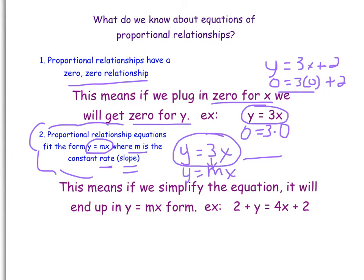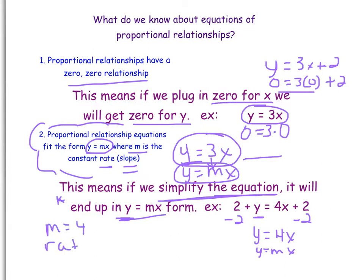We might have to change some things, and that's what we're going to be practicing today. To recap, this means if we simplify the equation, it will end up in the Y equals MX form. For example, here is my Y. I want to get that Y on a side by itself. So, you have to use what you know about solving equations to do that. It says plus 2, so we're going to subtract 2. Now I have Y equals 4X. It fits this form, Y equals MX. So, we know that it's proportional. And the M is 4. So, my rate is 4. And just to prove it, I'm going to plug in 0 for the Y and 0 for the X, and it makes a true statement. So, we also know we have that 0, 0 relationship.